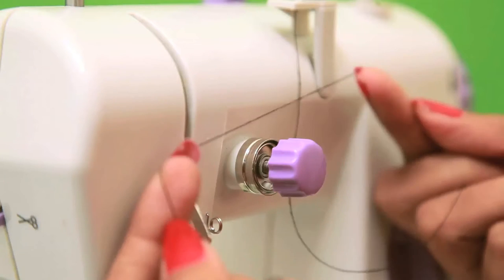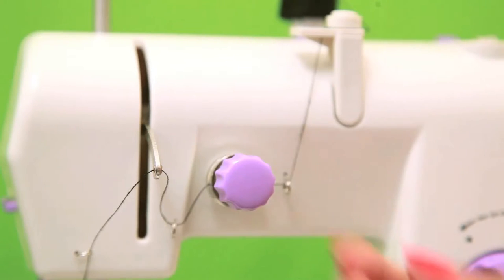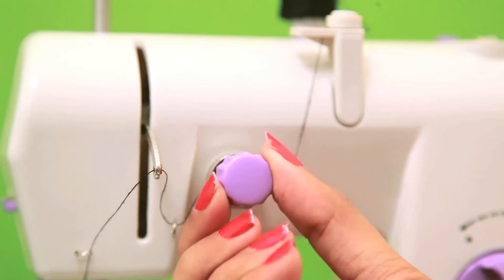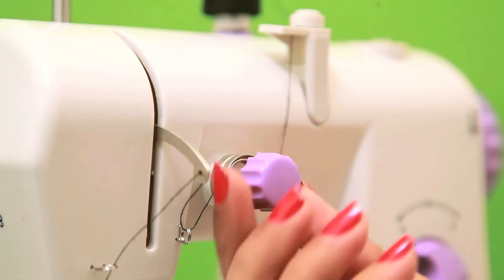However, in case you notice that the stitches are too loose or tight, then you can adjust it by turning the tension screw anti-clockwise to loosen the stitch and clockwise to tighten it.